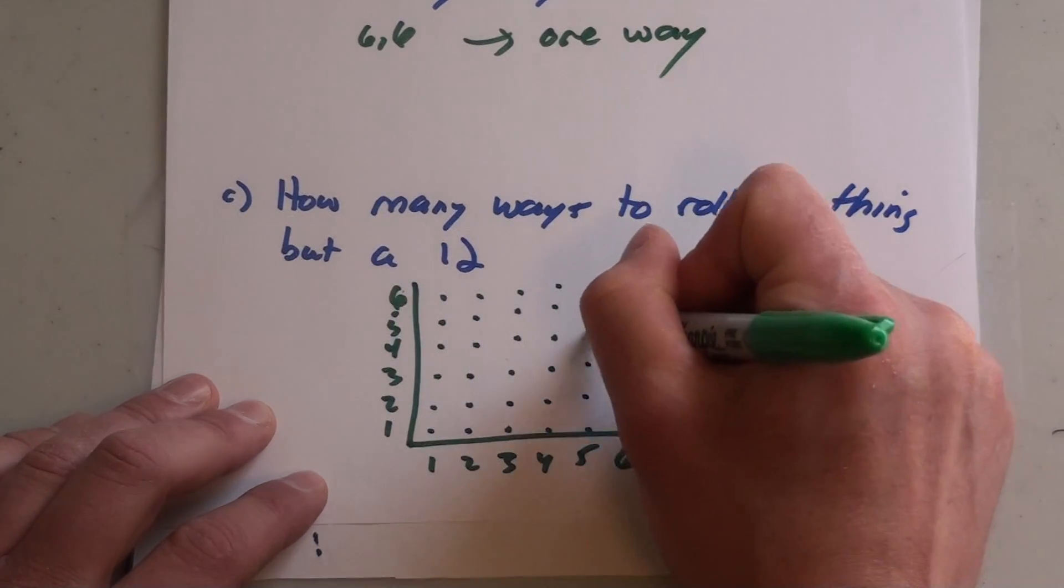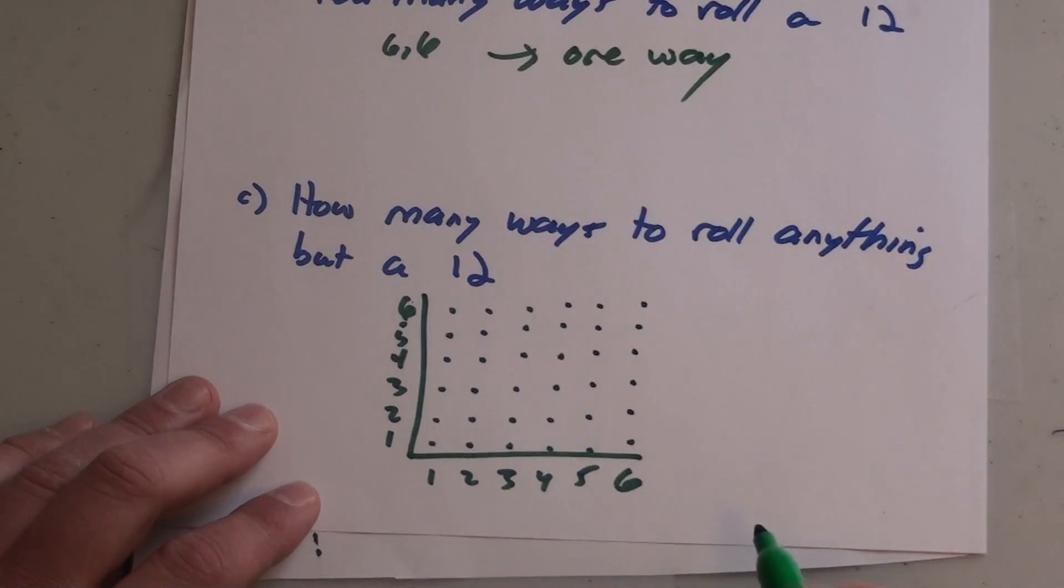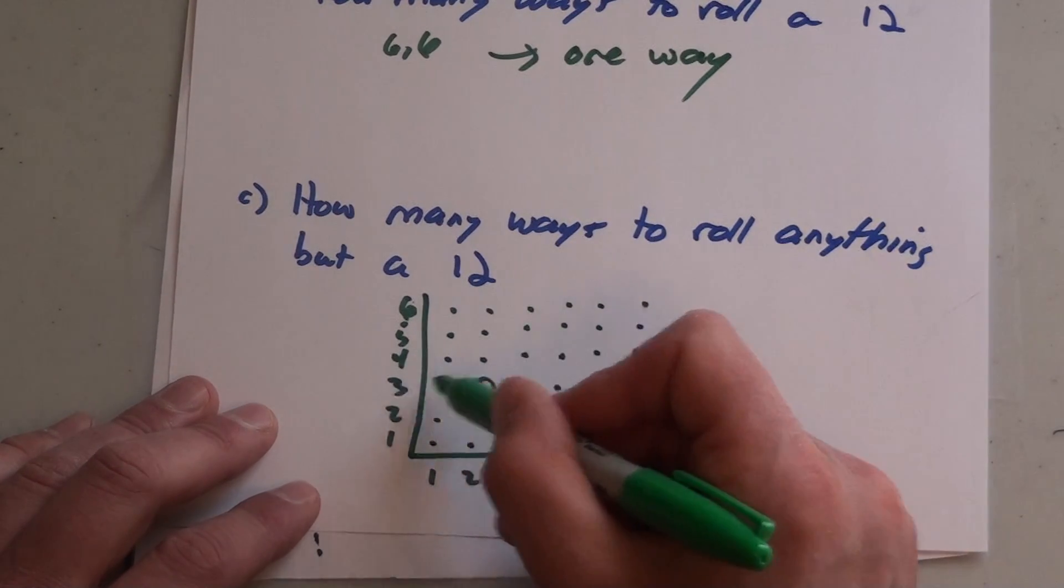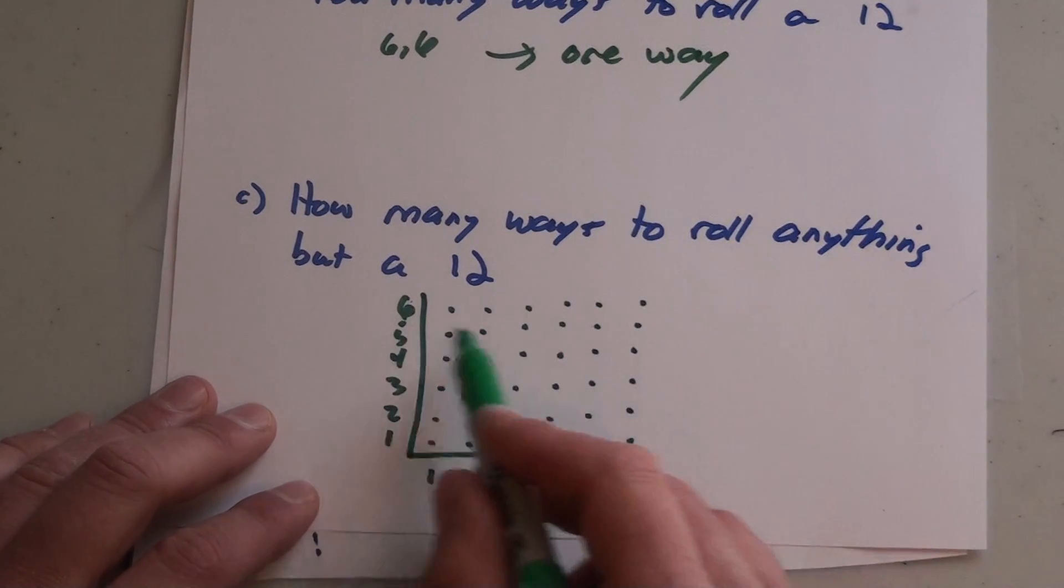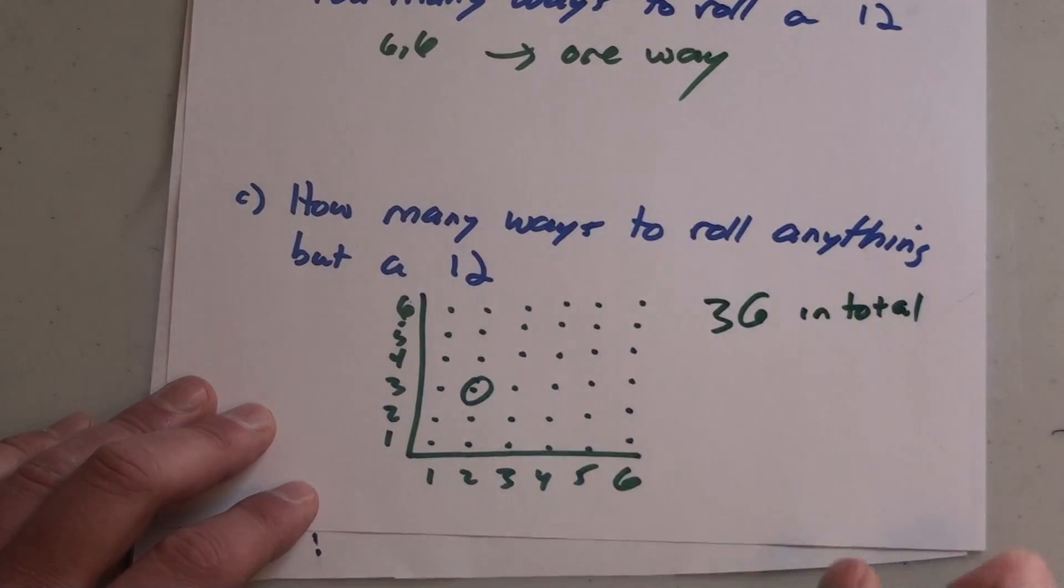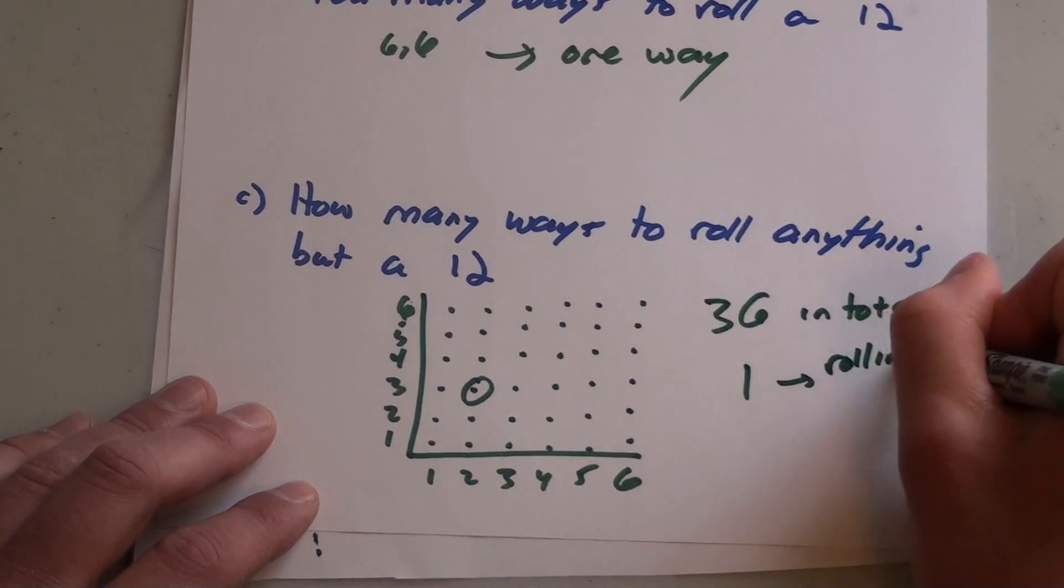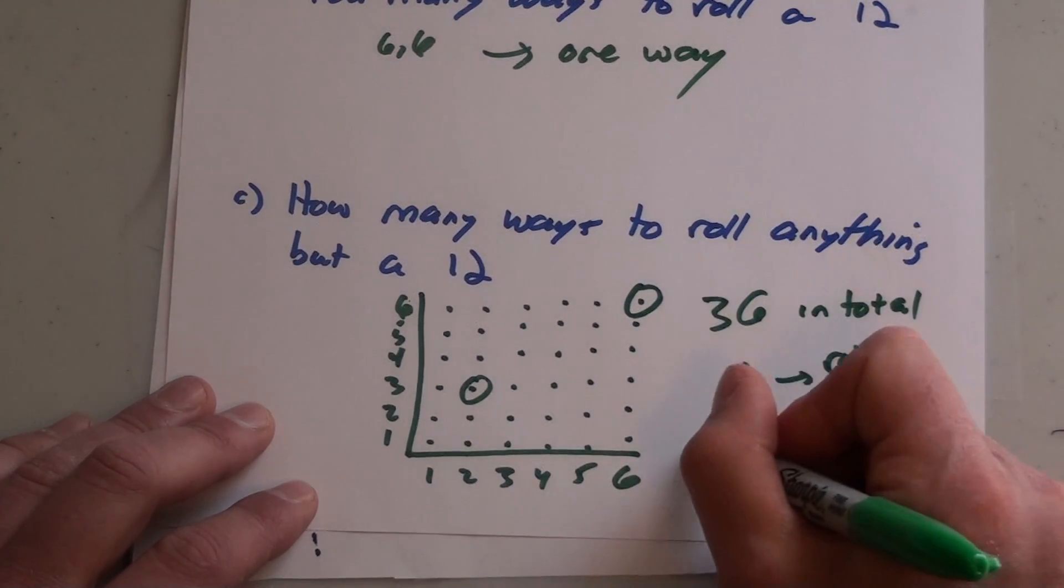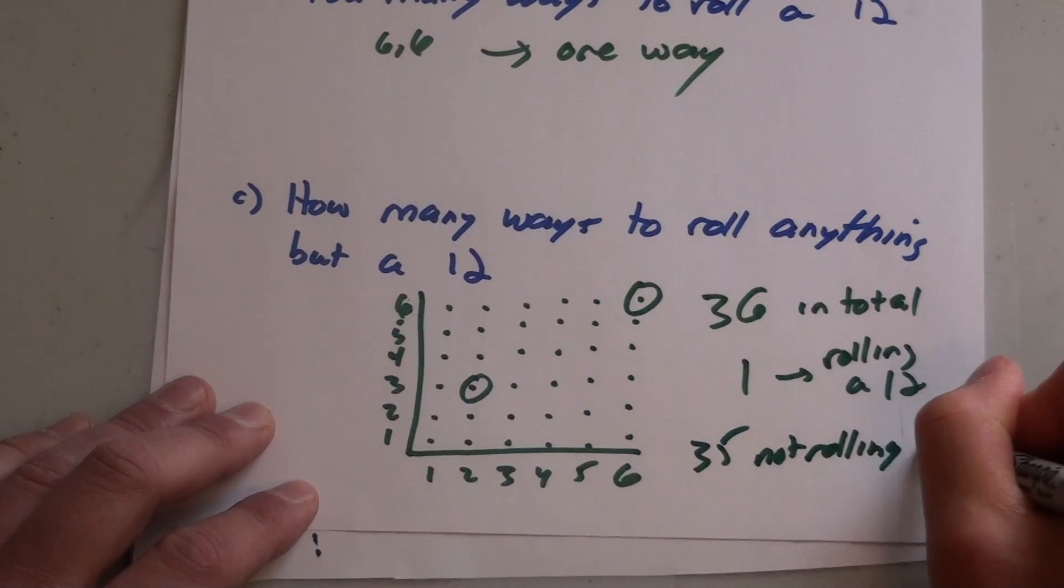This is a great visual way to see all possible scenarios. For example, this outcome right here - that outcome is rolling a three on the one die and a two on the other. Now how many total possible scenarios are there? There's 36 in total. There's one way of rolling a 12, and that's rolling a six and a six, so that means there's 35 ways of not rolling a 12.